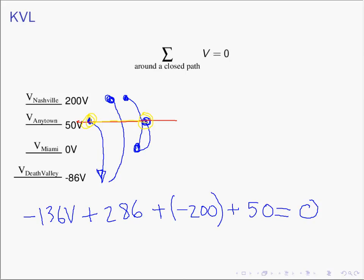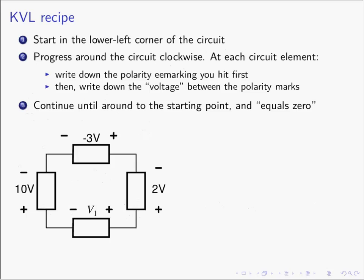That's conservation of energy. If KVL is not satisfied — if this law is not satisfied — then you have either created or destroyed energy. And you can't do that because of conservation of energy. So that's what KVL is. Now let's do an example of how we can actually put KVL into use in everyday situations. Here I have a recipe for Kirchhoff's Voltage Law, and this is the way I always do KVL.